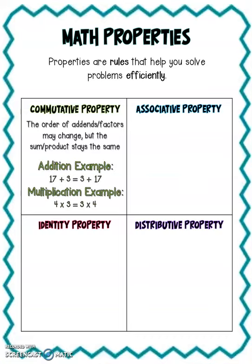So for example, in addition, I might have 17 plus 3, and I can say that that's exactly the same as 3 plus 17. It doesn't matter if the 17 comes first, like it is on the left, or second, like it is on the right, because my answer is still going to be 20.